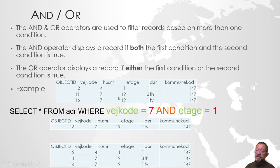Is vejkode 7? Yes. Is etasia 1? Yes. So this row here, number 16 is then included in our result.